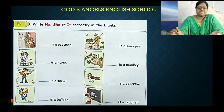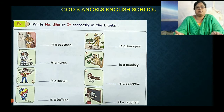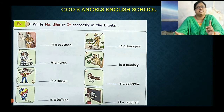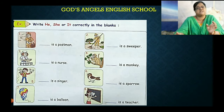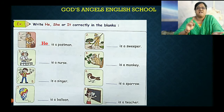Right — fill in the blanks with he, she, and it. अब यहाँ पर देखो, picture में कौन है? Postman. Postman is a man — he is a man. तो man के लिए, postman के लिए हम क्या word use करेंगे? He. H-E लिखेंगे वहाँ पर.